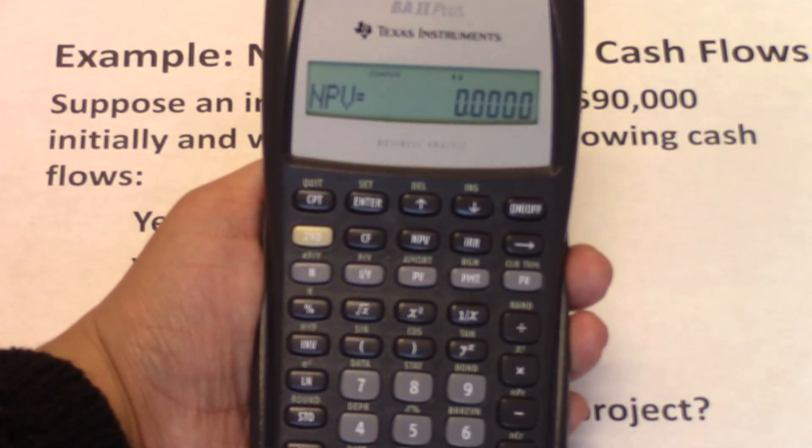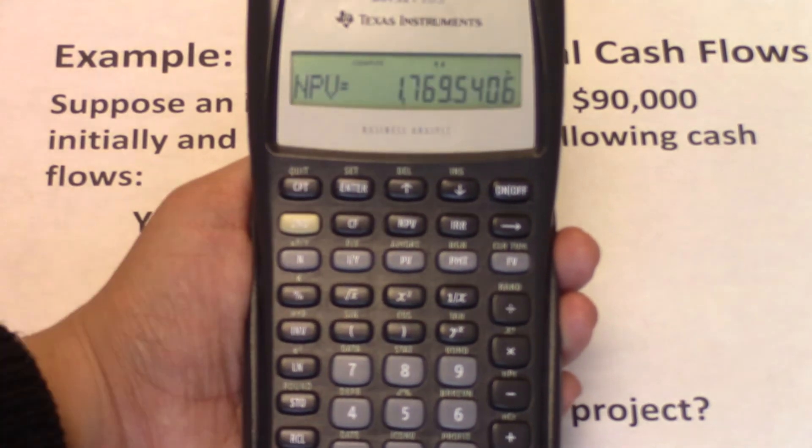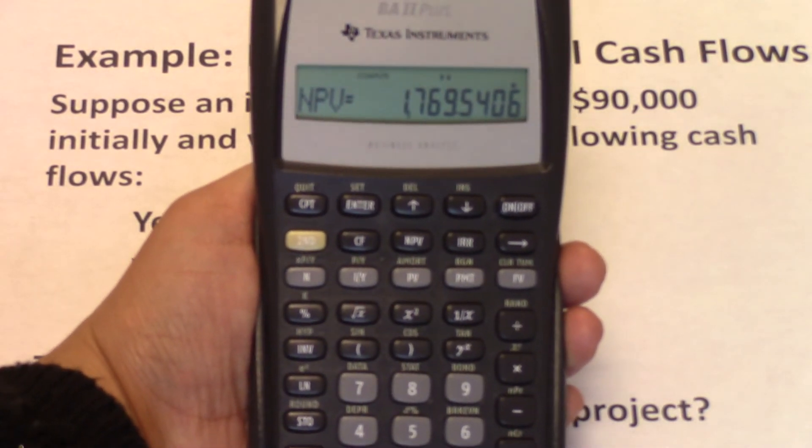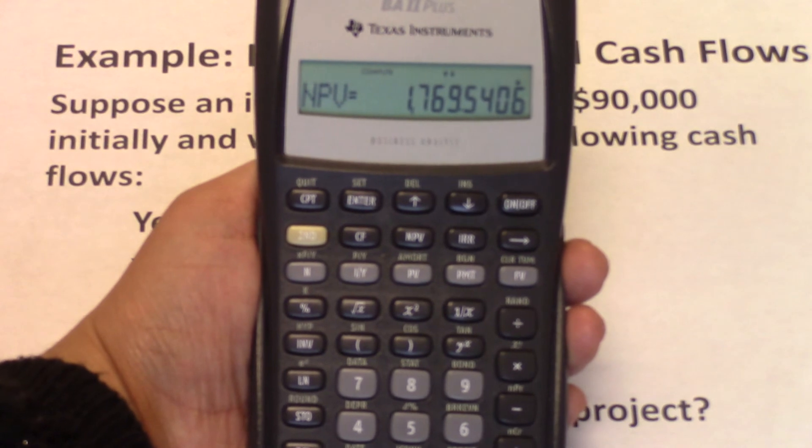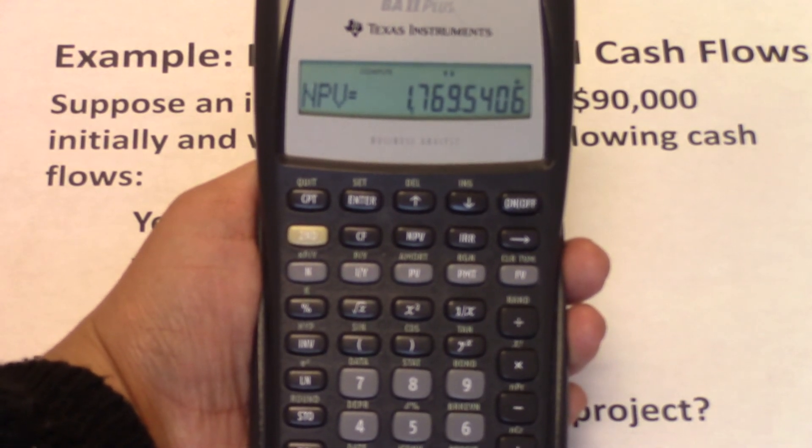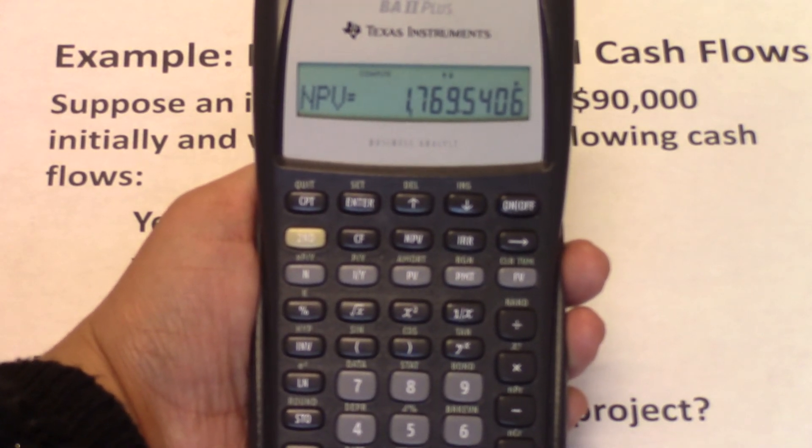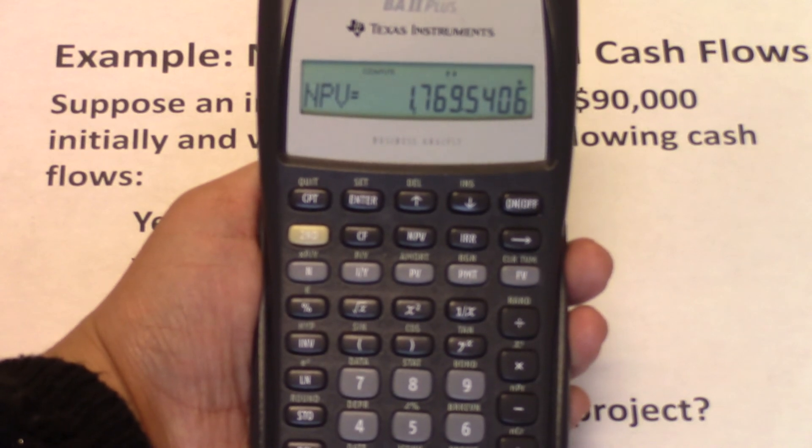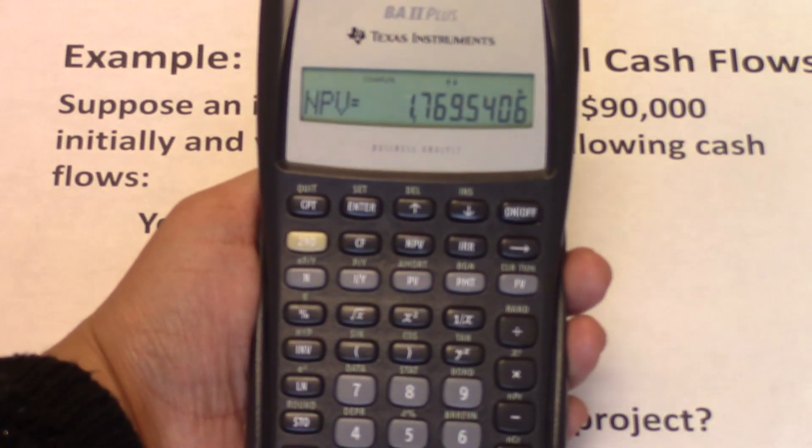Now we are ready to compute. So now you just do CPT. This gives us an NPV of $1,769.54. The NPV here is positive, is greater than zero. Therefore, we're creating value if we invest in this project. And therefore, we should accept it.